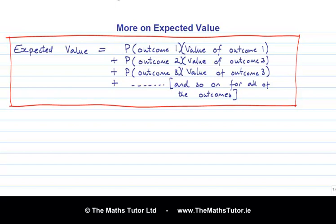So, what it says is that the expected value is the probability of the first outcome times the value of the first outcome, plus the probability of the second outcome times the value of the second outcome, and so on, through all the outcomes.